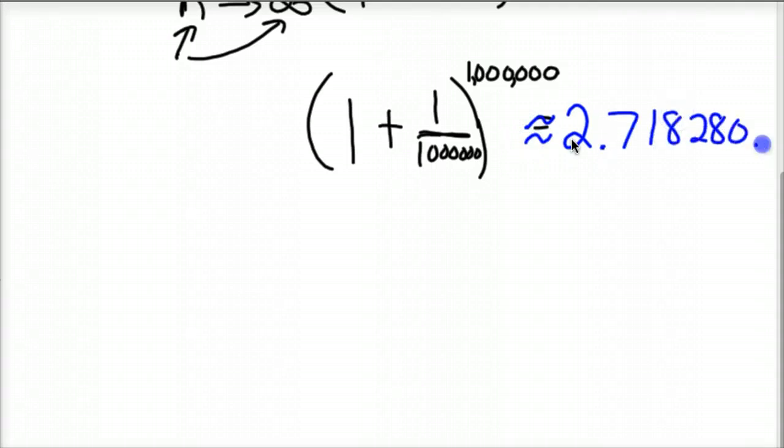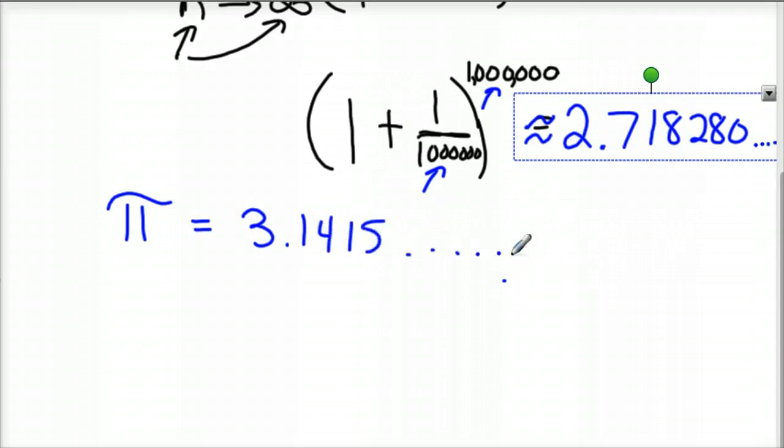2.718280 blah blah blah. And so you can only imagine, as this number gets bigger and bigger, so as one, let's not use a million. Let's use a trillion or a billion. What happens is this number approaches an irrational number, kind of like pi. We know pi, you've learned this since you were in elementary school. Pi is 3.1415 dot dot dot. And it keeps going on and on forever. Well, e to the first power, just like pi is to the first power, is 2.718 dot dot dot, forever. So, you can treat it like the number pi. It's an irrational number, essentially.